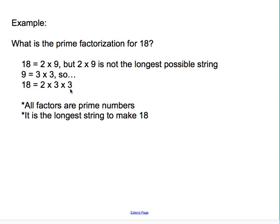At this point, we know that we have the longest string, and the reason we know that is because every factor in this string, 2 times 3 times 3, every factor is a prime number. 2 is prime, 3 is prime. All factors are prime numbers, so it is the longest string to make 18. Therefore, the answer to the question, what is the prime factorization for 18? That answer is 2 times 3 times 3.